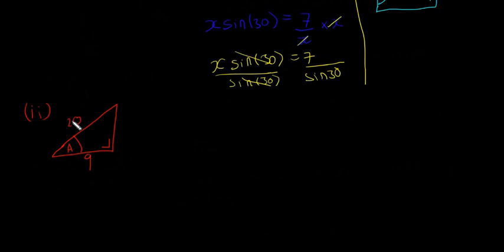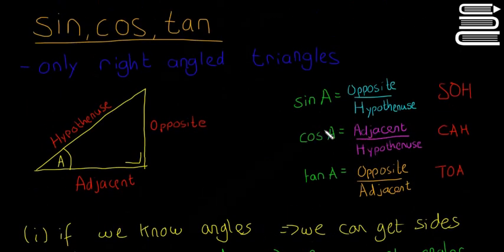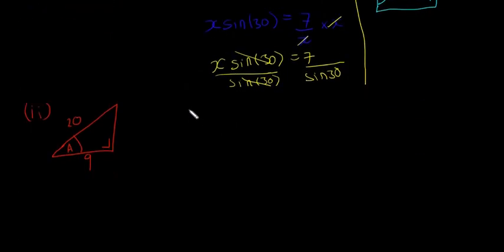We have the adjacent side and the hypotenuse. If we go up to our SOH CAH TOA, we have adjacent and hypotenuse, so we're going to use cos A. Cos of A equals adjacent over hypotenuse. So cos of A equals the adjacent side, which is 9, over the hypotenuse, which is 20.